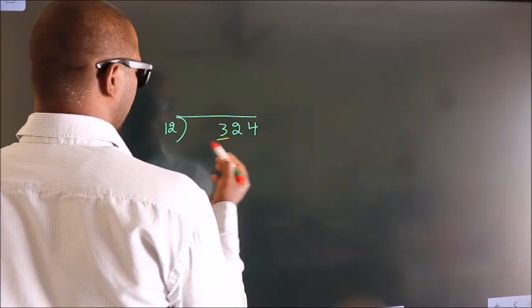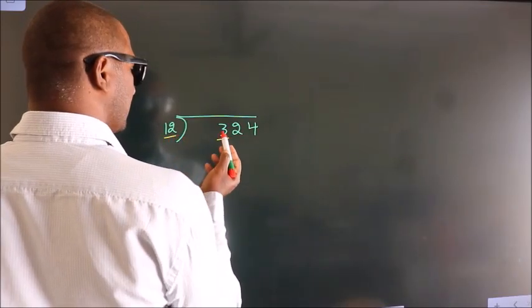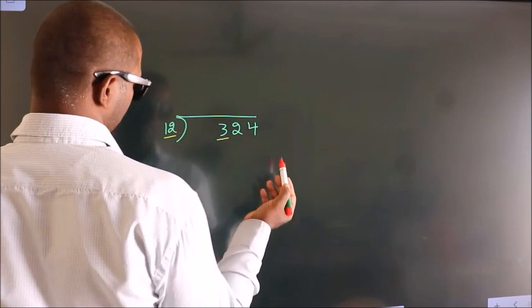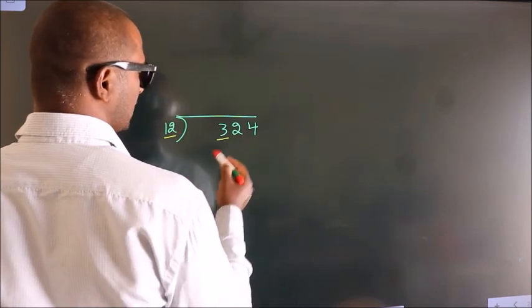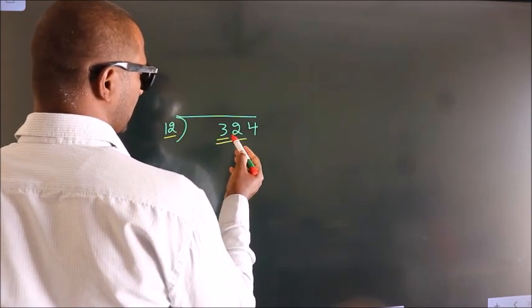Here we have 3. Here 12. 3 smaller than 12. So we should take 2 numbers. 32.